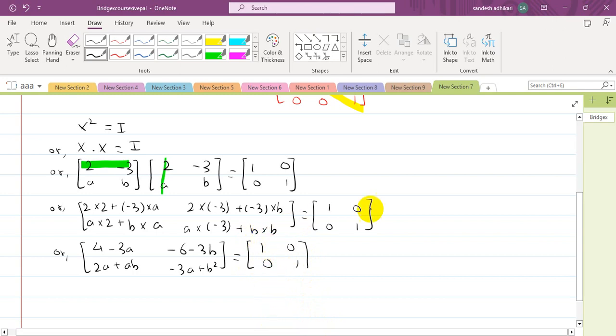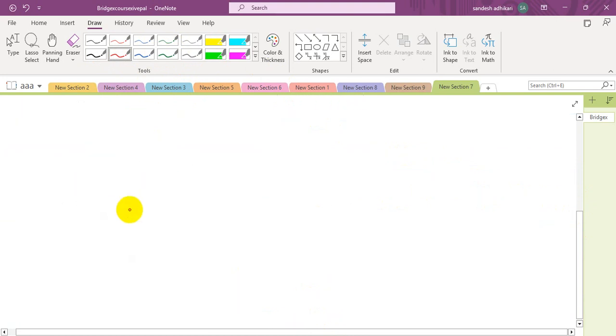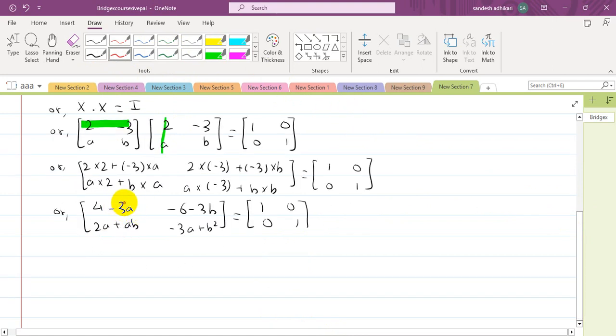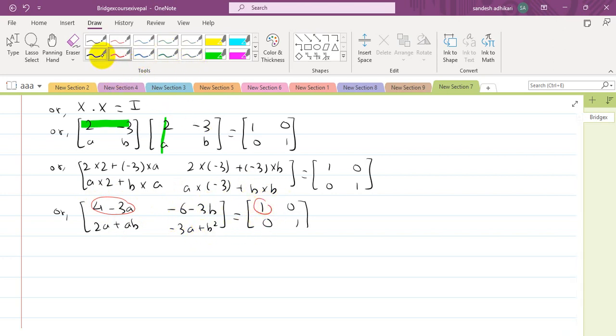After multiplying, we get [4 - 3a, -6 - 3b; 2a + ab, -3a + b²] equals [1, 0; 0, 1]. Now we equate corresponding components. First component with first, second with second, third with third, fourth with fourth.